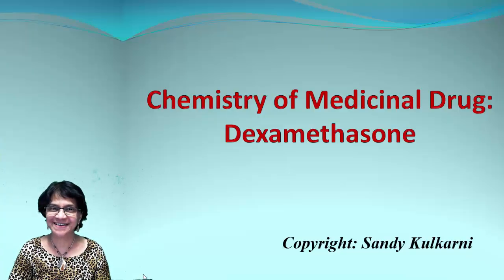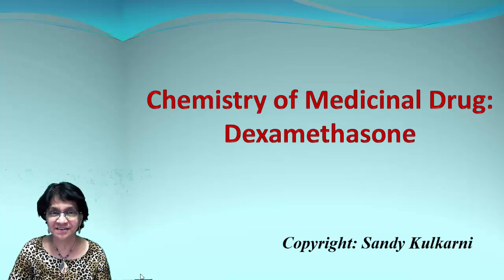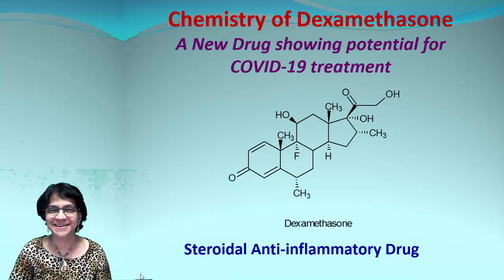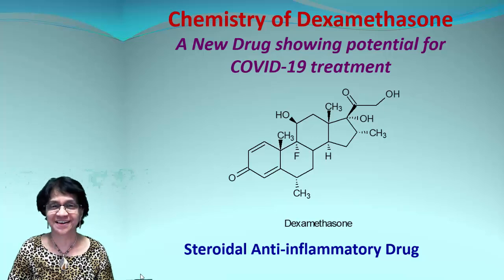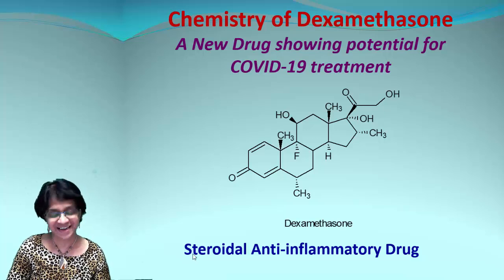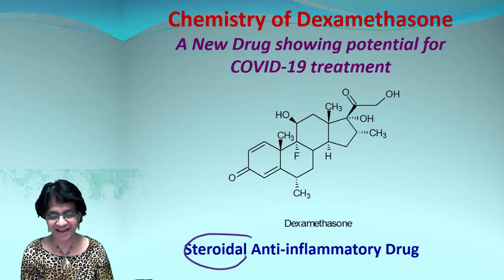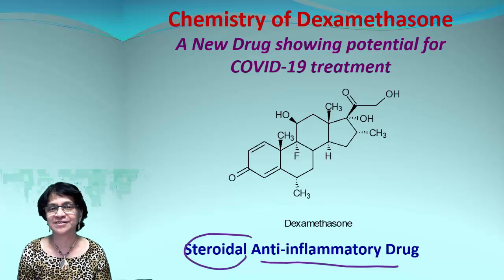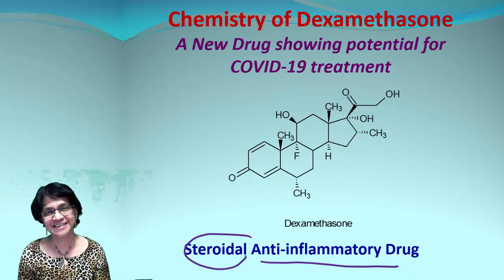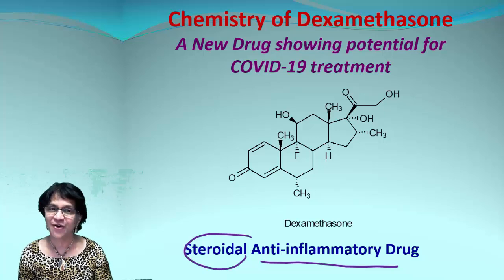In this video, let's talk about a medicinal chemistry drug: dexamethasone. This is the structure for dexamethasone. You've probably heard about this drug recently — it's in the news and showing some potential for COVID-19 treatment. It's a fascinating drug: it's an old drug, classified as a steroid, and it's an anti-inflammatory drug used for simple inflammations, allergies, skin irritations, and similar conditions.